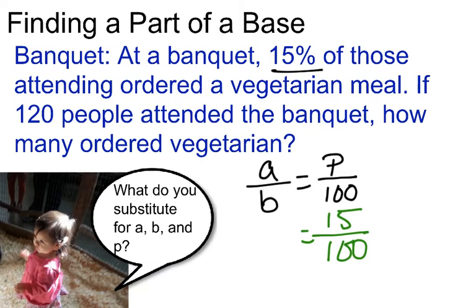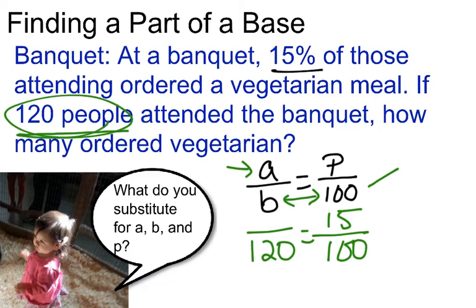Now I know that 120 people attended, and I want to know how many ordered vegetarian. So the people attended, what you have to ask yourself, is that part or is it the total? Now if 120 people attended total, that means I'm looking for the part. So I have 120 people is my B because it lines up with my total percent of 100.